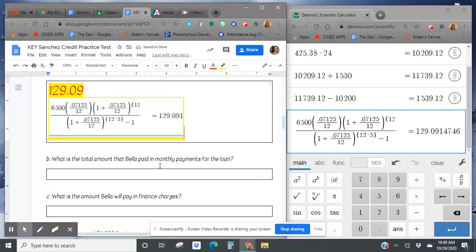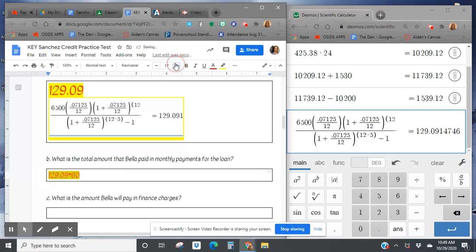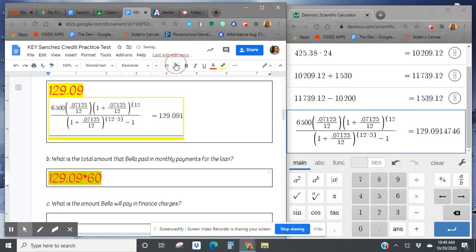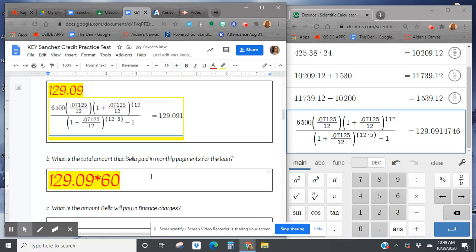What is the total amount Bella paid in monthly payments for the loan? So you take this $129.09 and multiply it by the 60 months of payments. Where does the 60 come from? This comes from five years, 12 months in a year. So 12 times 5 is 60.